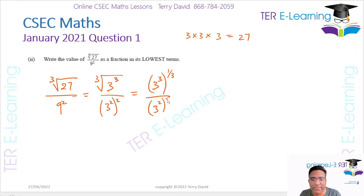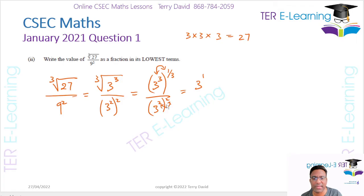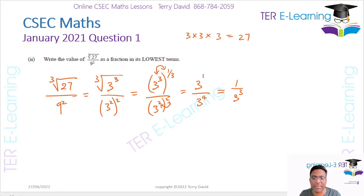Applying the indices rule on the numerator: 3 times one third equals 1, so we get 3 to the power 1. On the denominator, 2 times 2 gives 4, so that's 3 to the power 4. This can be written as 1 over 3 cubed, and my answer is 1 over 27. They said they want the fraction in its lowest terms.